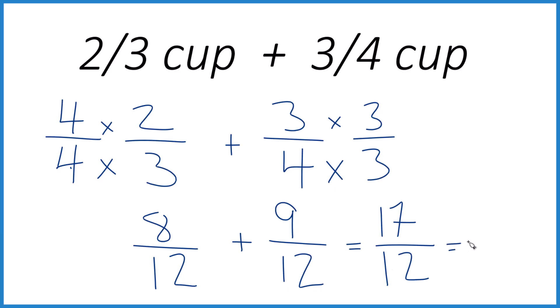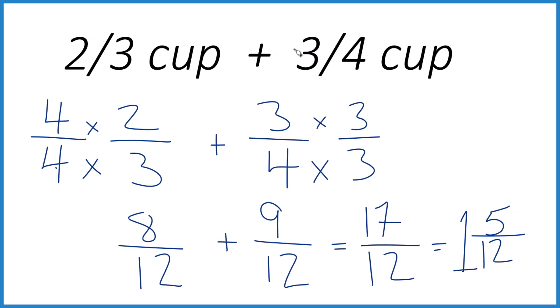Let's change it to a mixed number. Twelve goes into seventeen one time with five left over. Then you bring the twelfth across, and you end up with one and five-twelfths. So you could also say two-thirds of a cup plus three-fourths of a cup equals one and five-twelfths of a cup.